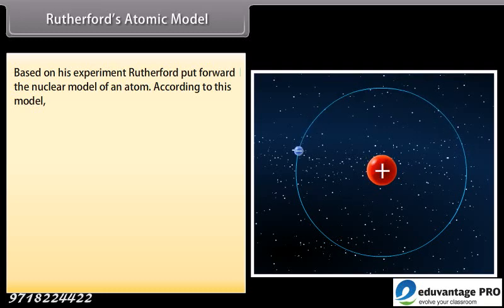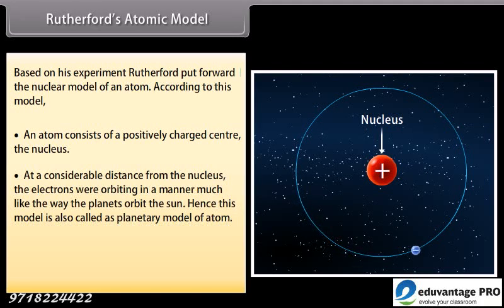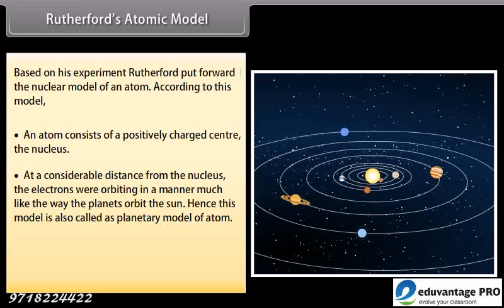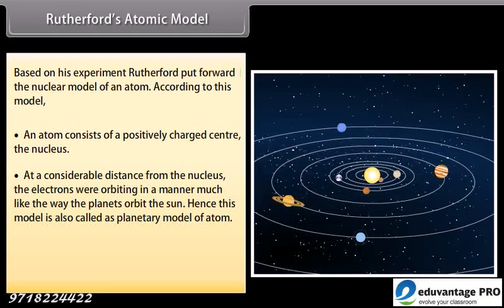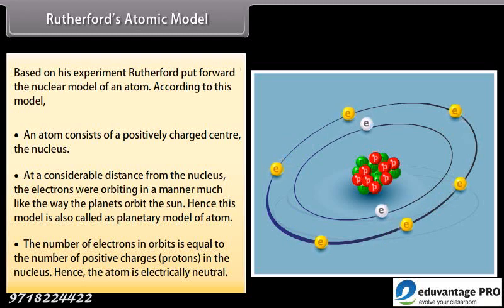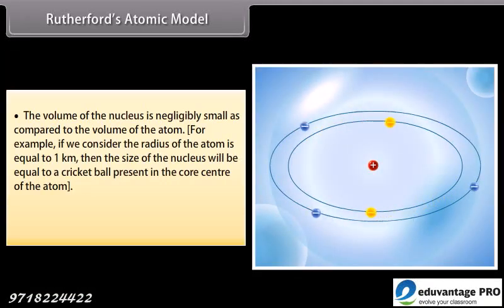Rutherford's Atomic Model. Based on his experiment, Rutherford put forward the nuclear model of an atom. According to this model, an atom consists of a positively charged center, the nucleus. At a considerable distance from the nucleus, the electrons were orbiting in a manner much like the way the planets orbit the sun. Hence, this model is also called as planetary model of atom. The number of electrons in orbits is equal to the number of positive charges, protons, in the nucleus. Hence, the atom is electrically neutral. The volume of the nucleus is negligibly small as compared to the volume of the atom.